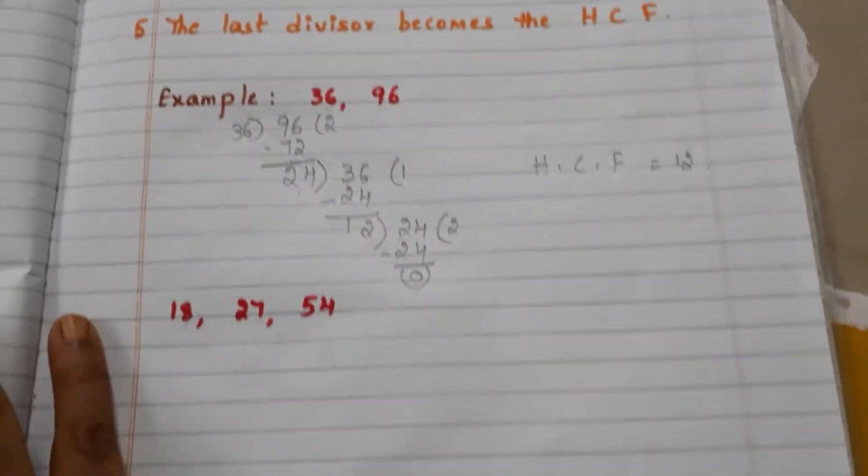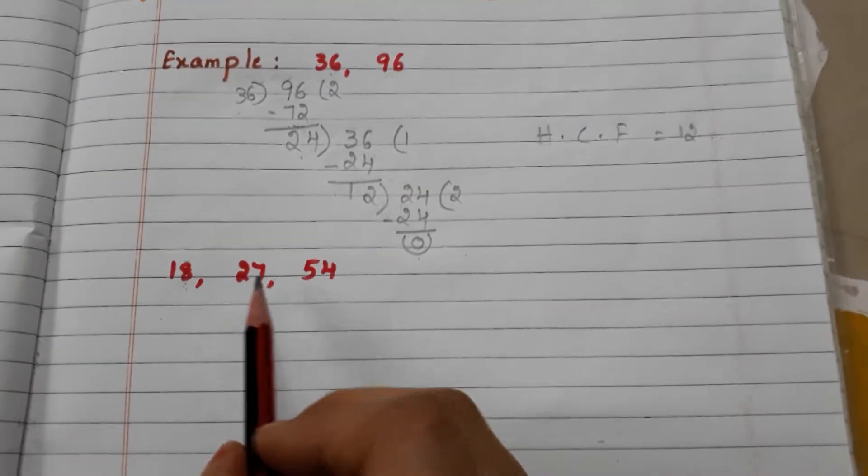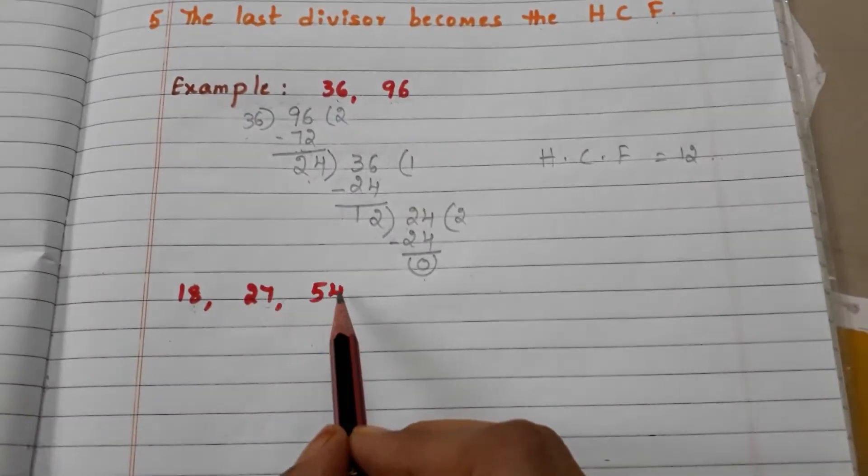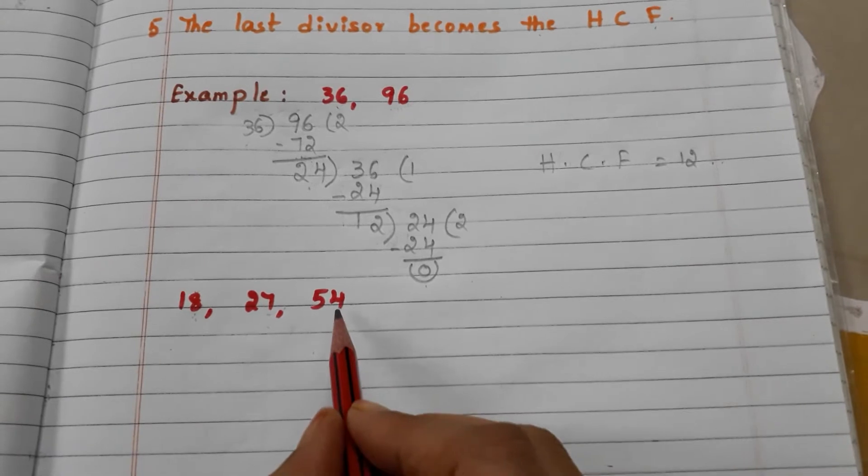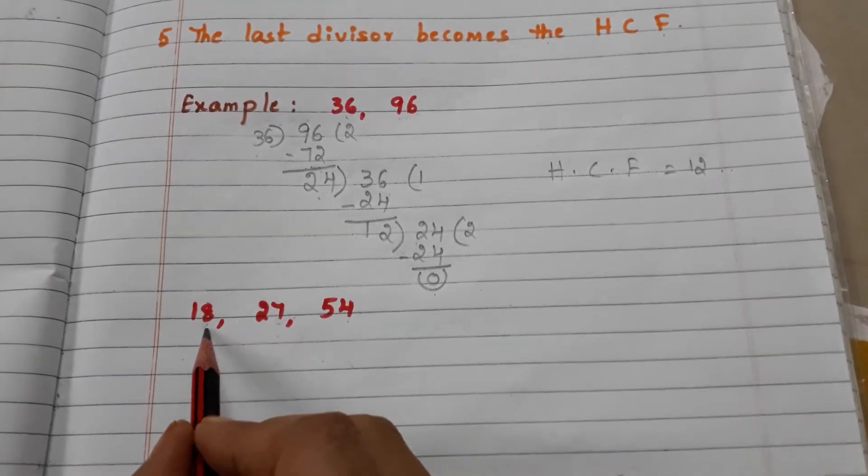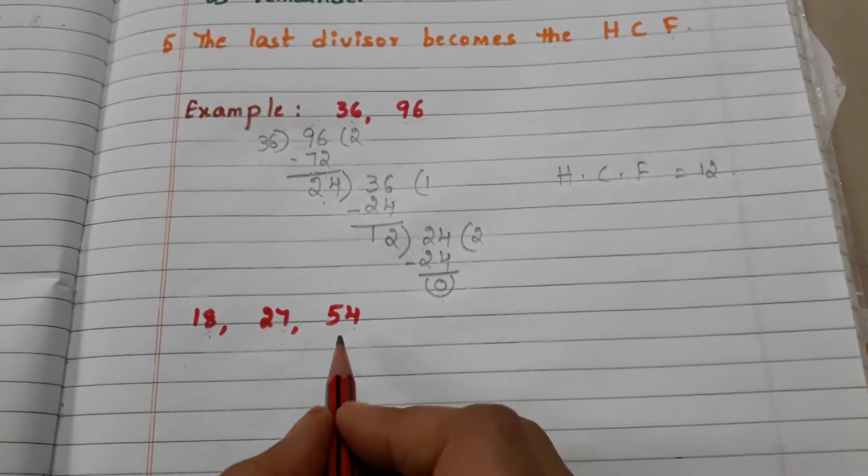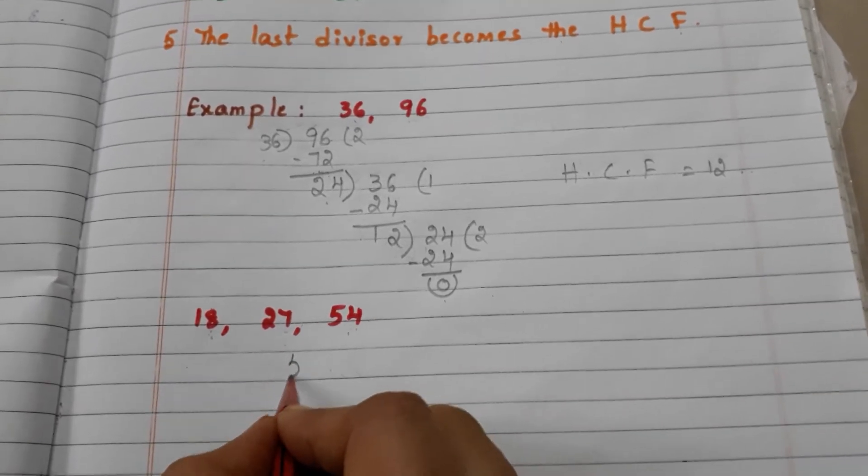Let us go to another example. Here we have three numbers: 18, 27, and 54. What is the largest number? 54. And what is the smallest number? 18. We have to divide 54 with 18. Let us divide.